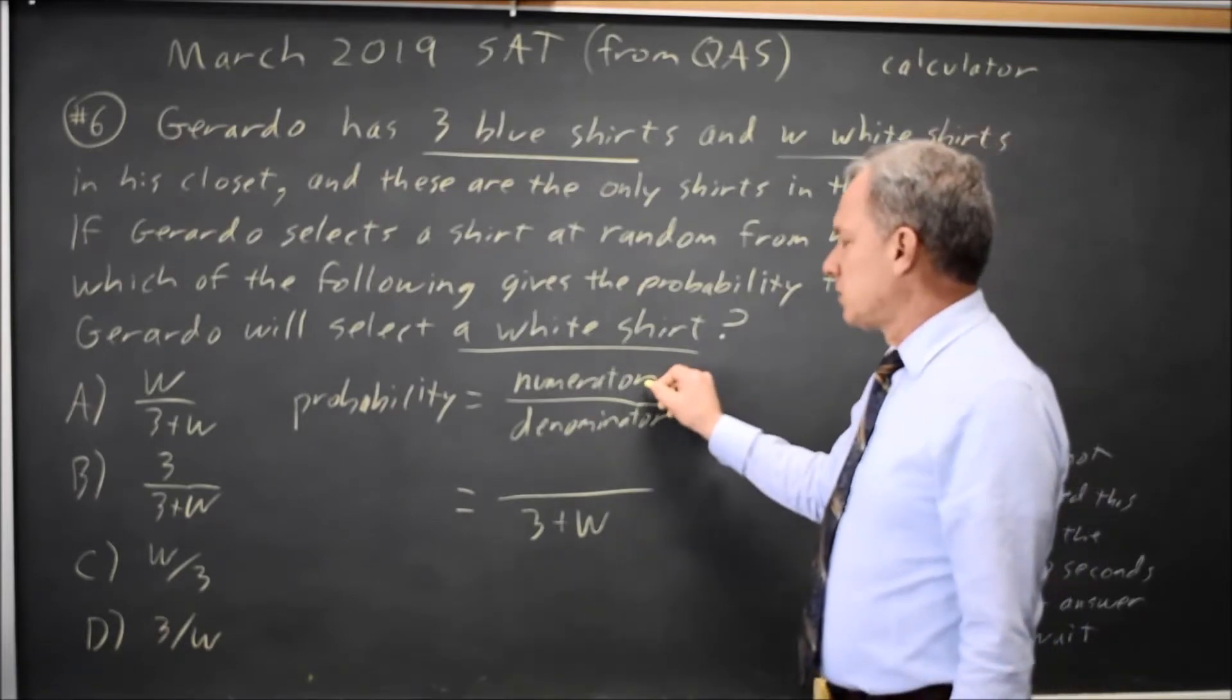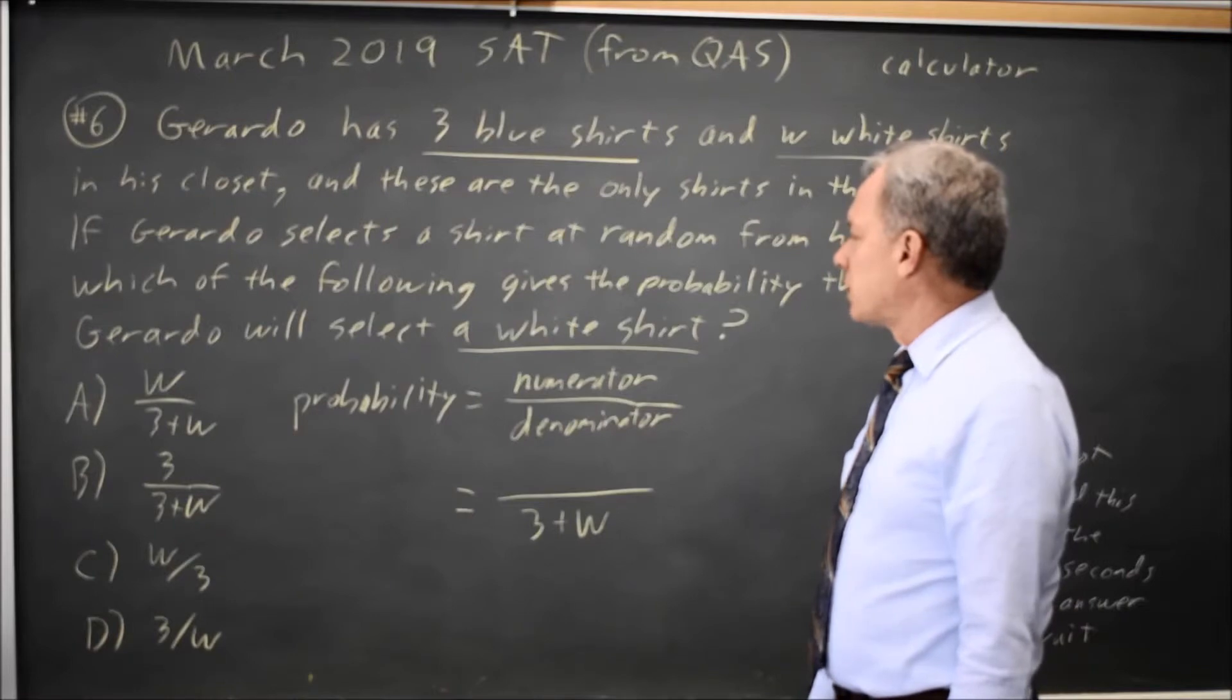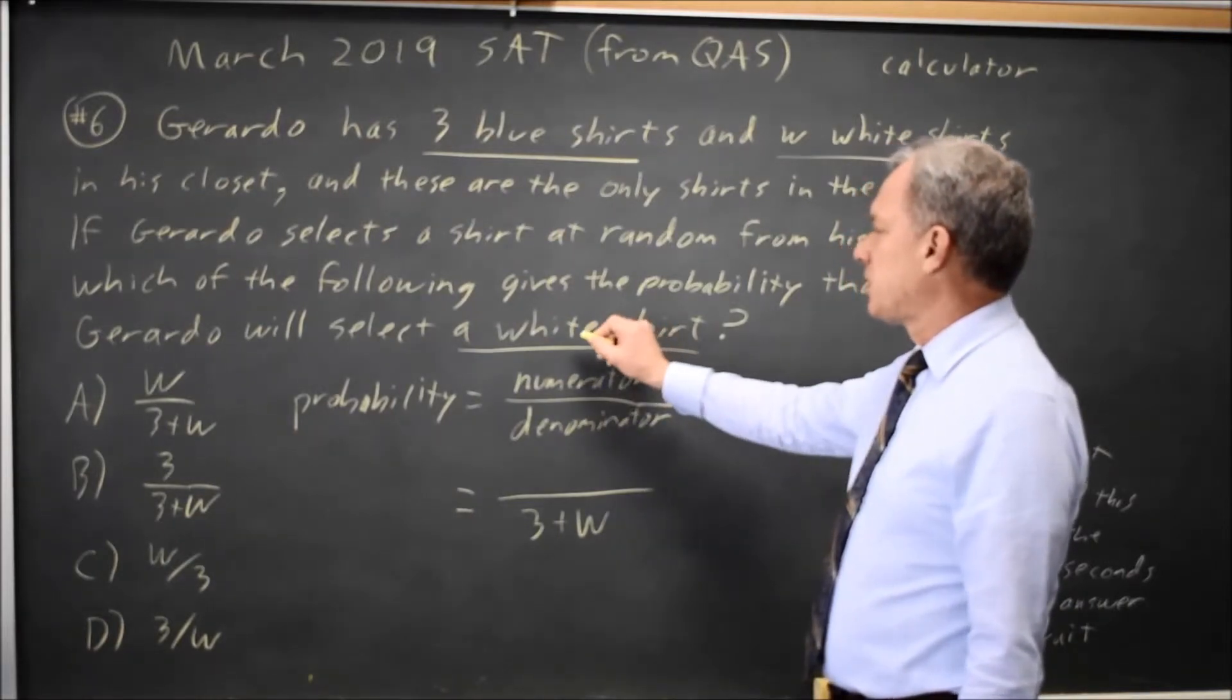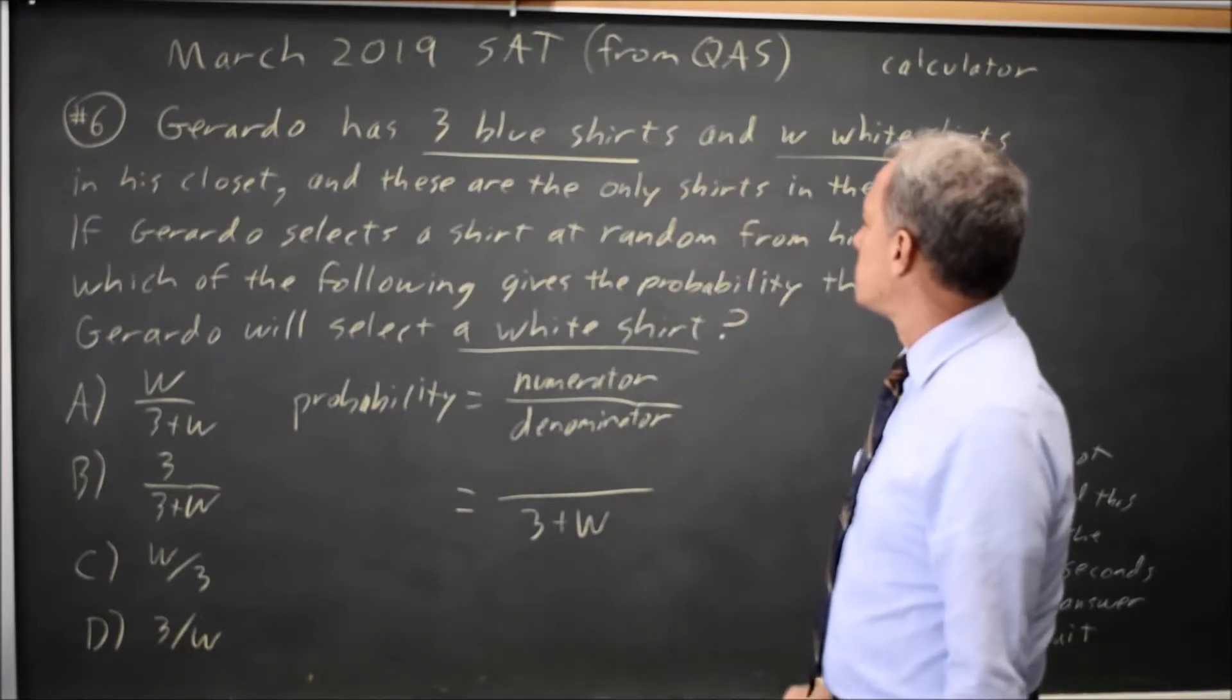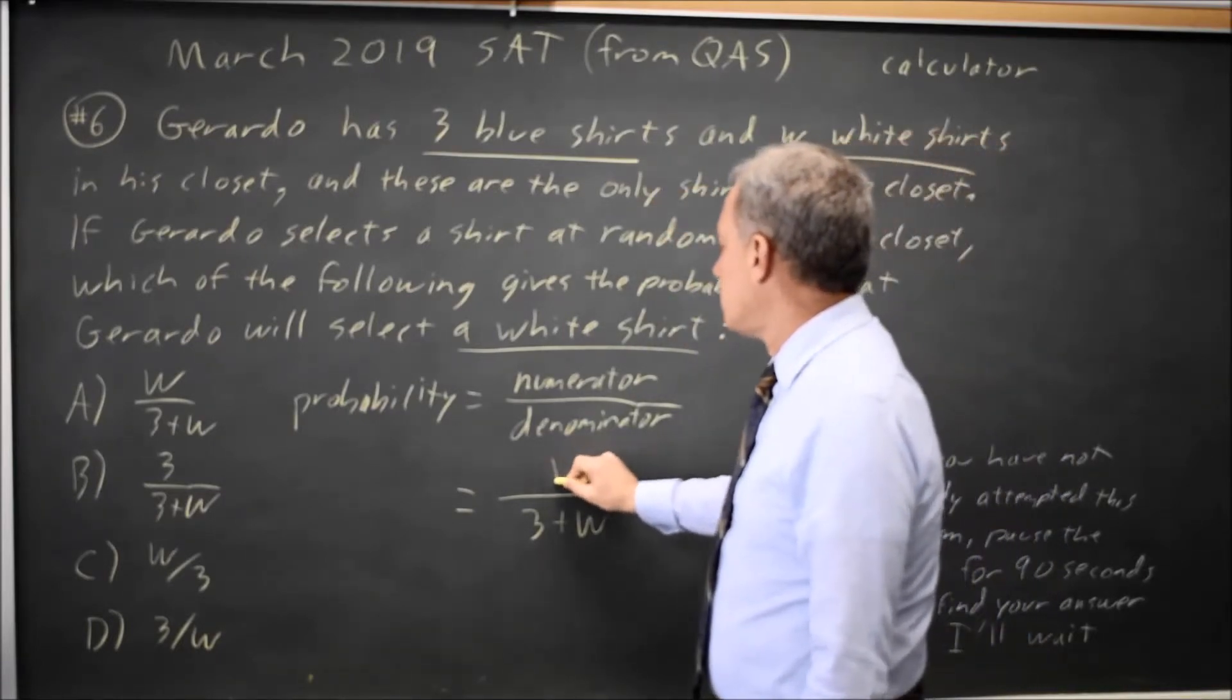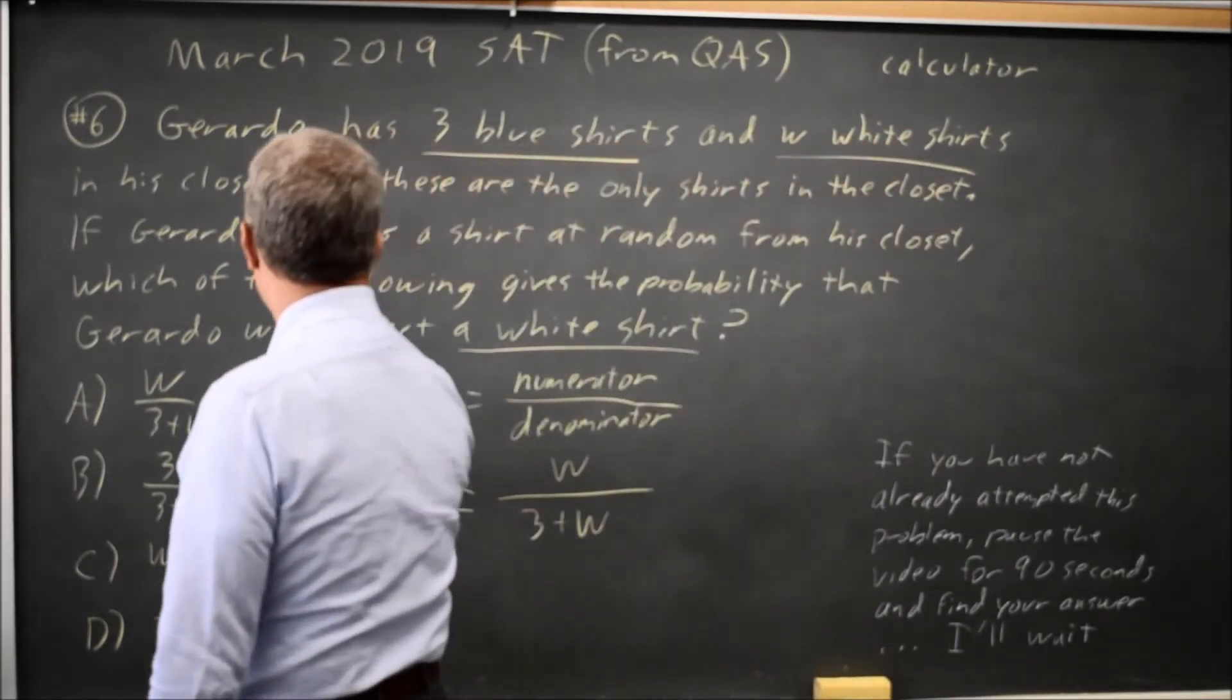The numerator is among those items in the denominator which ones are considered a success. The numerator is the white shirts among all the shirts we chose, and white shirts is W, so the probability is W over three plus W. That would be choice A.